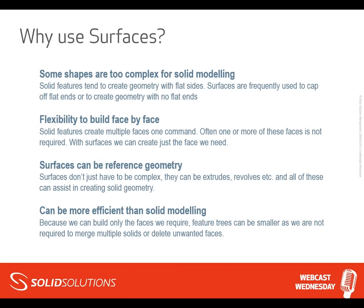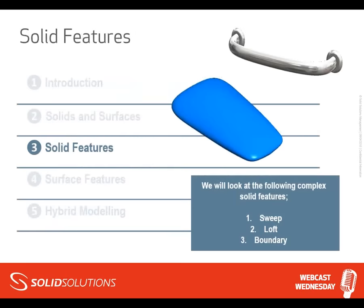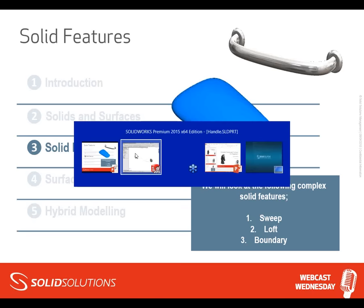So what we'll look at first is complex geometry in terms of solid features, and there will be three features we'll use: the sweep, the loft, and the boundary. Now the sweep is a simplified version of the loft and boundary tool — they're actually very similar tools, just with different applications, which we'll get into in a moment. We'll start with the sweep.